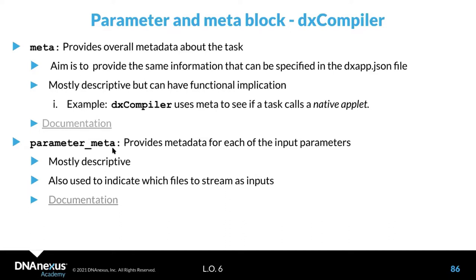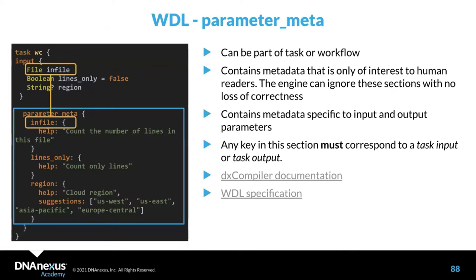Here is an example of parameter meta in a WDL specification. We have a file as an input and the name of our input matches the key in the parameter meta section. Here 'in_file' corresponds to the number of lines in that file. In another example, the in_file could have a DX type to stream, specifying the stream parameter.